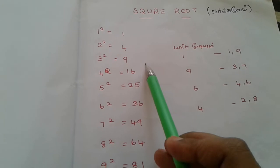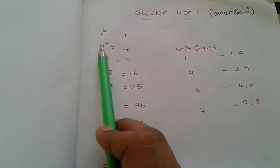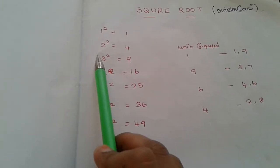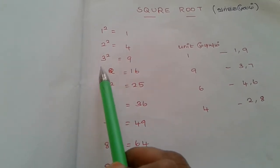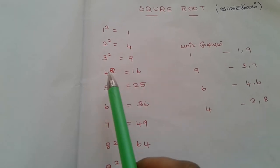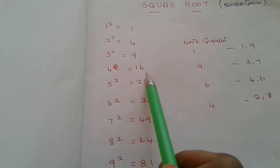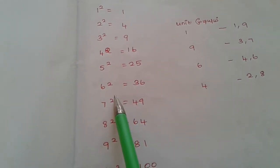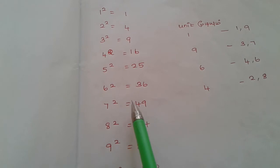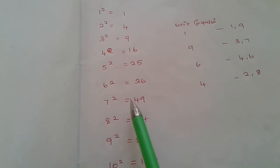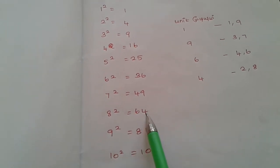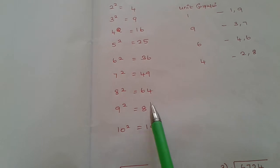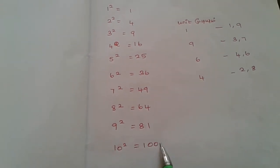First, we will study the squares. 1 squared equals 1, 2 squared equals 4, 3 squared equals 9, 4 squared equals 16, 5 squared equals 25, 6 squared equals 36, 7 squared equals 49, 8 squared equals 64, 9 squared equals 81, 10 squared equals 100.